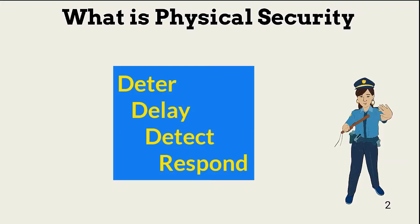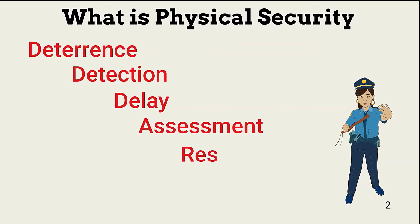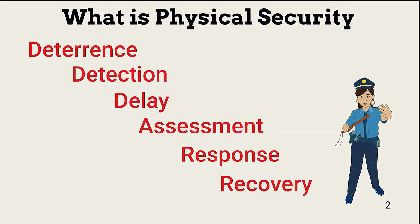The objective of physical security is to ensure an organization can plan for and effectively respond to intruders or other unexpected facility events. When designing and implementing physical security, we seek to deter intruders with barriers. If an intruder bypasses one or more barriers, we need a way to detect her via controls like alarms and cameras. The barriers and detection controls must delay an intruder until humans can assess what is happening and then respond before the intruder achieves her objectives and to minimize adverse human impact.